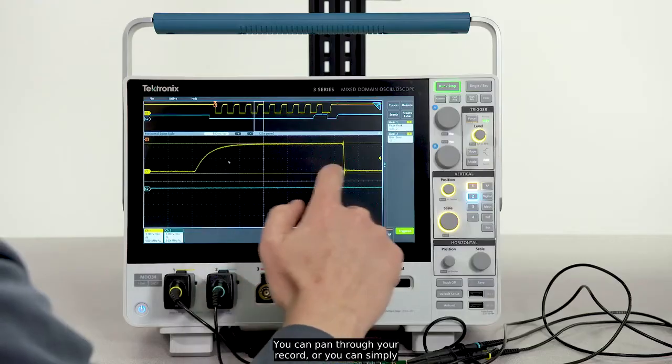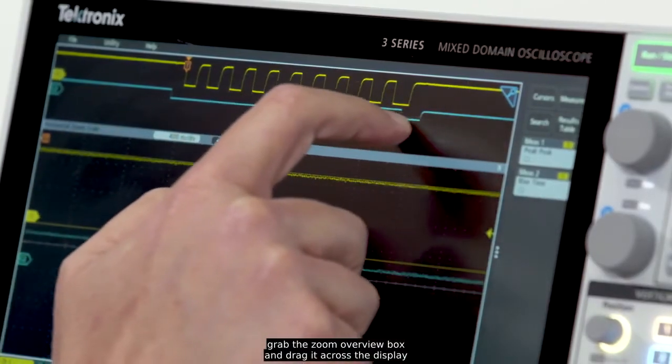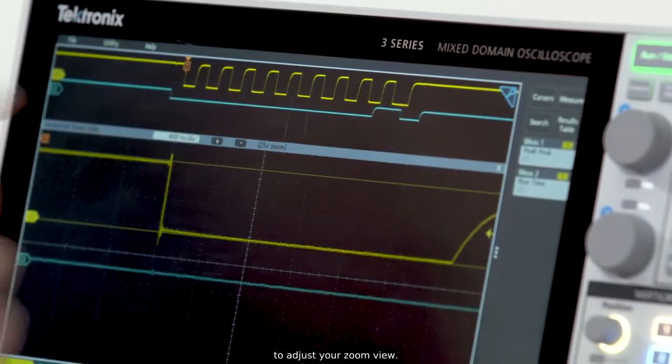You can pan through your record or you can simply grab the zoom overview box and drag it across the display to adjust your zoom view.